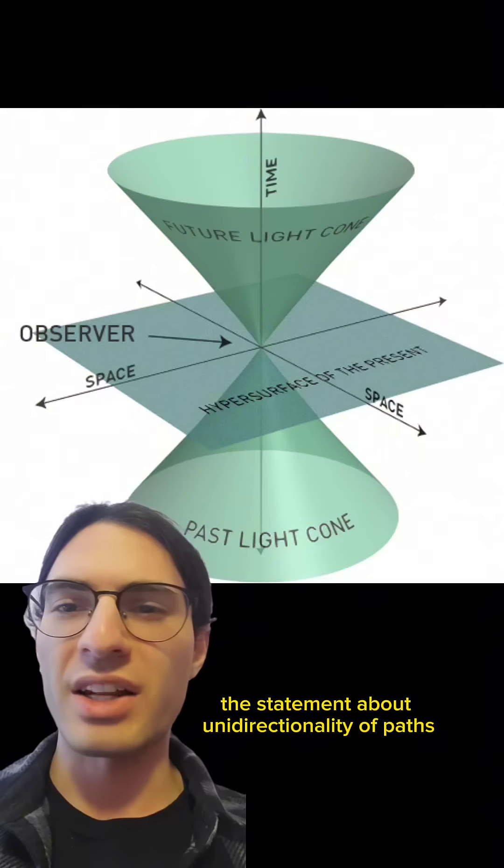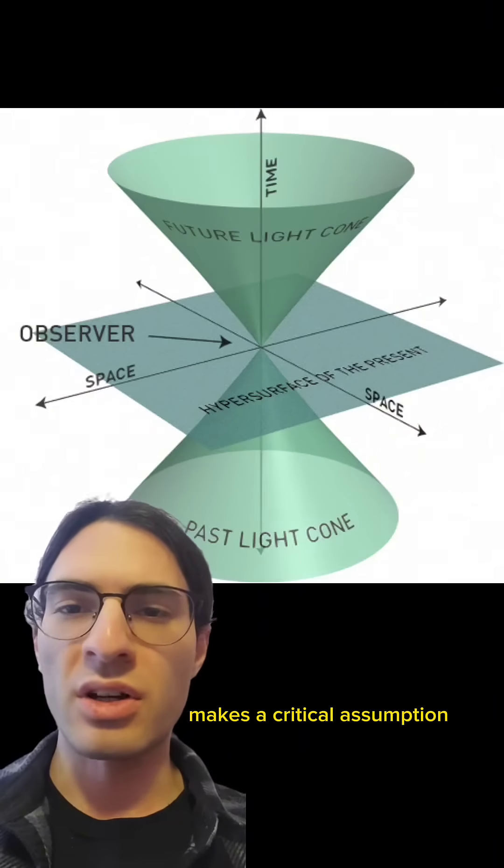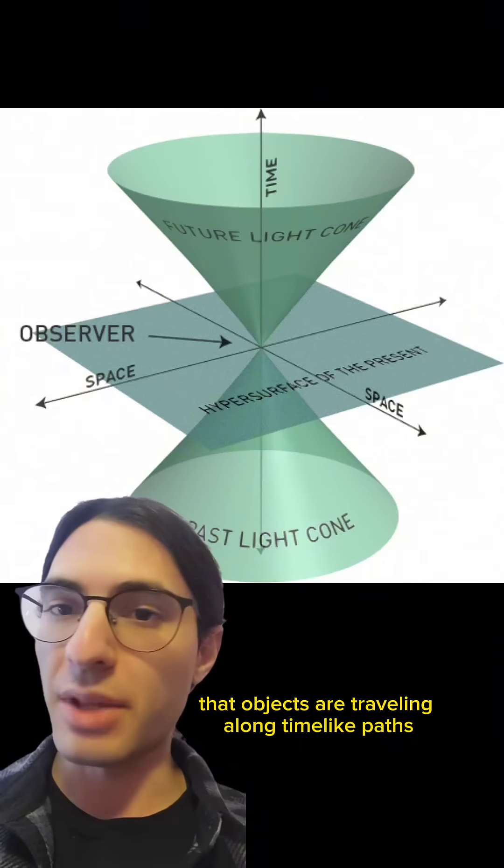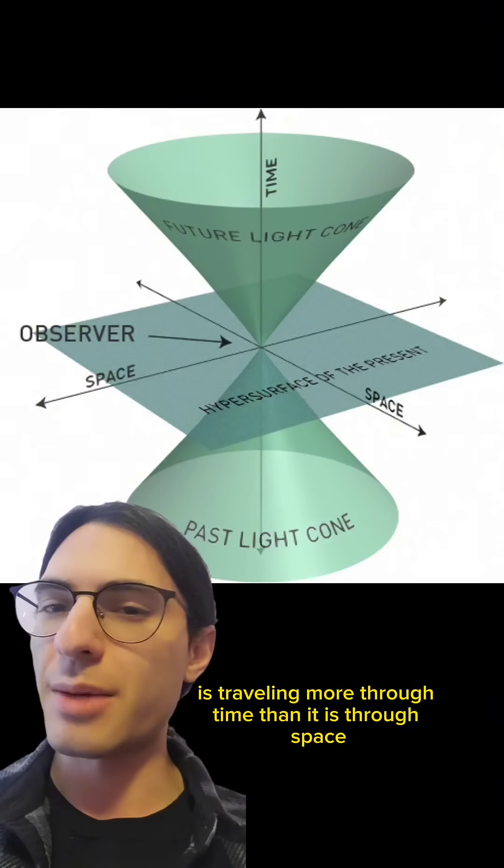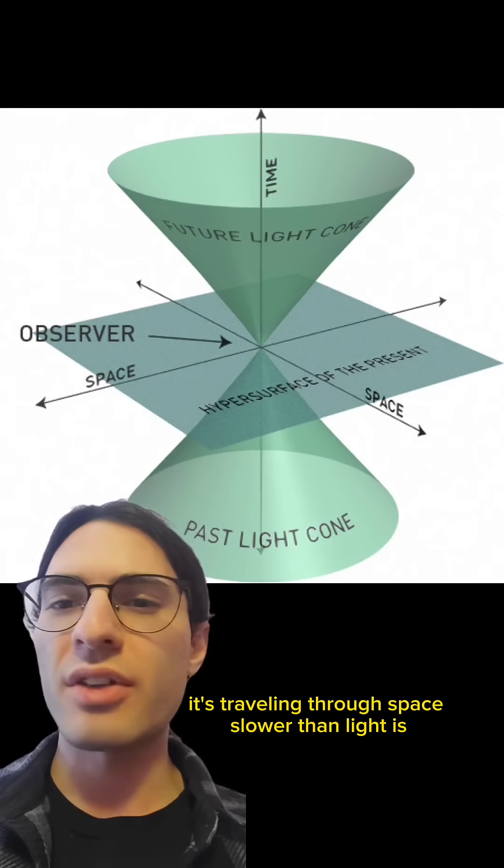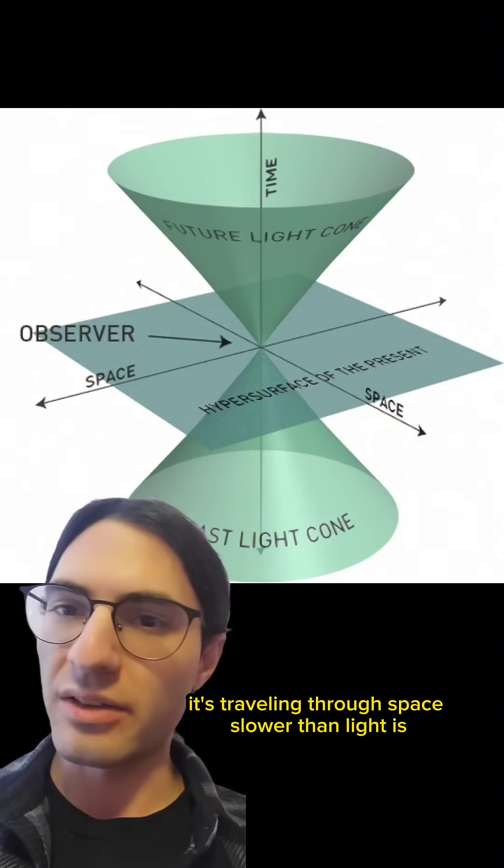The statement about unidirectionality of paths makes a critical assumption that objects are traveling along time-like paths. What this means is that an object is traveling more through time than it is through space. In other words, it's traveling through space slower than light is.